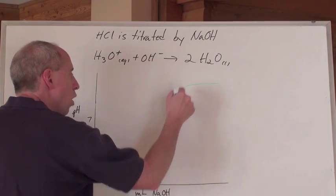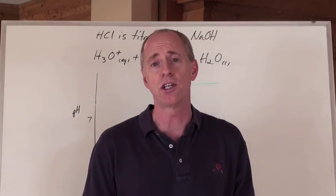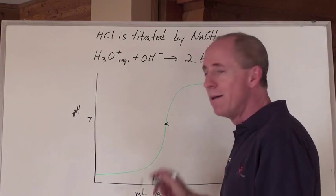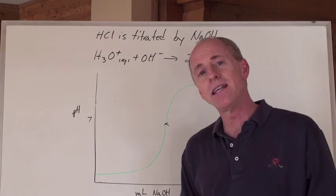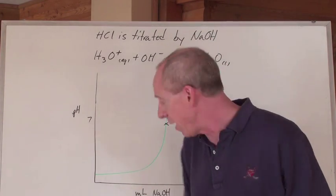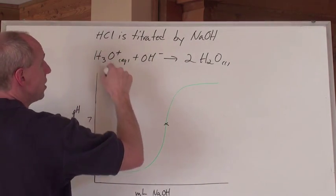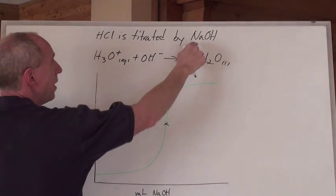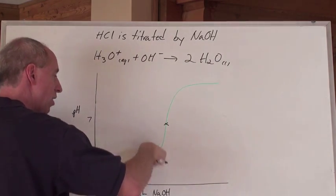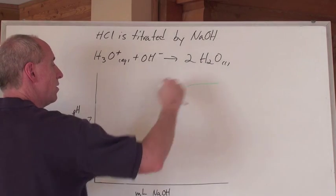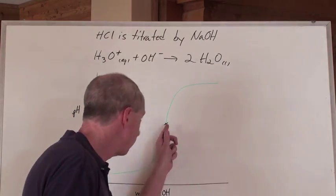The equivalence point is always in the middle of the greatest change. You'll notice a steep upswing, and the midpoint of that greatest slope is where the equivalence point is. For example, if this were 0.1 mol/L HCl, it would start at about pH 1. For 0.1 mol/L NaOH, it would level off to about pH 13 when added in excess. But the equivalence point is going to be at pH 7 for a strong acid, strong base titration.